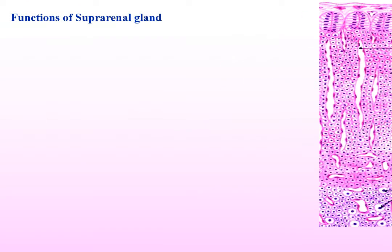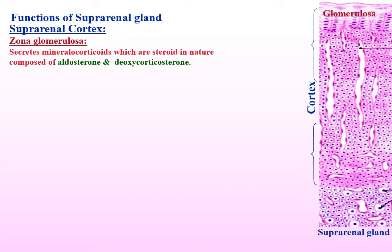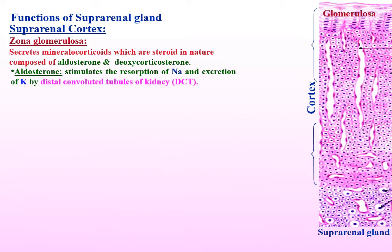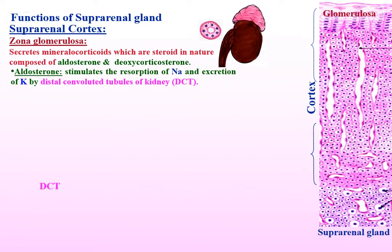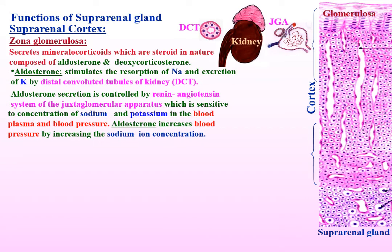Functions of the suprarenal gland — suprarenal cortex: zona glomerulosa secretes mineralocorticoids, which are steroid in nature, composed of aldosterone and deoxycorticosterone. Aldosterone stimulates the reabsorption of sodium and excretion of potassium by distal tubules of the kidney. Aldosterone secretion is controlled by the renin-angiotensin system of the juxtaglomerular apparatus, which is sensitive to concentration of sodium and potassium in the blood plasma and blood pressure. Aldosterone increases blood pressure by increasing the sodium ion concentration.